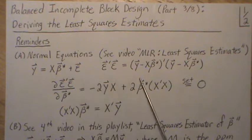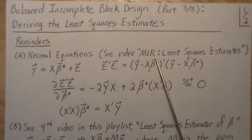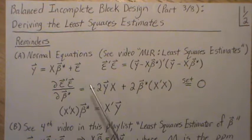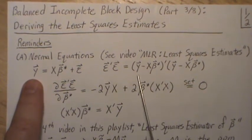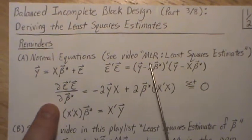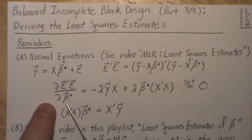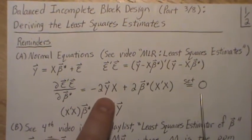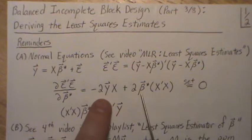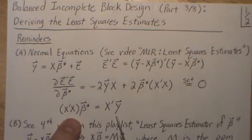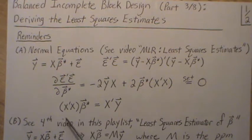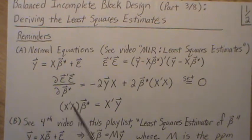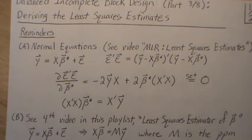So the normal equations—I have a video called Multiple Linear Regression Least Squares Estimates where we derive this. We have a linear model, then we look at the squared errors, take partial derivatives associated with the betas, and it comes out to this, and we set it equal to zero. These are what's called the normal equations. And then to solve for beta, if x is full column rank, you just take the inverse. If it's not, you have to take a generalized inverse.